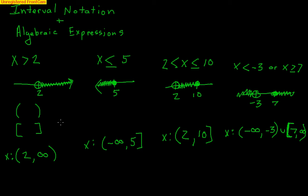Interval notation uses parentheses and brackets, and also infinities. A common question is: would you ever put a bracket on infinity or negative infinity? The answer is no — infinities always have parentheses. It's numbers that can be included, like 5 here, or not included, like 2 here. Infinity is a concept — the fact that it goes on forever. So we don't ever use a bracket on infinity. That's a quick rundown of interval notation, which we will be using a lot this year.